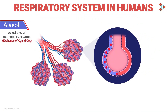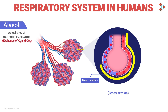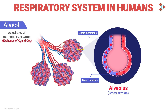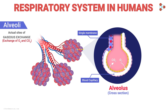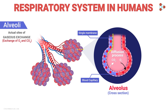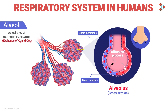Zooming in to see a single alveolus, we find that the cluster is richly supplied with blood capillaries. A cross-sectional view of a single alveolus shows that it is very thin and composed of a single-celled membrane. The extremely thin membrane allows easy exchange of gases between the alveolus and the RBCs flowing through the capillaries. Gas exchange occurs via diffusion — oxygen that arrives at the alveolus diffuses across the membrane and is grabbed by the RBCs, while carbon dioxide diffuses into the alveoli and travels back the complete tract to exit through the nostrils.